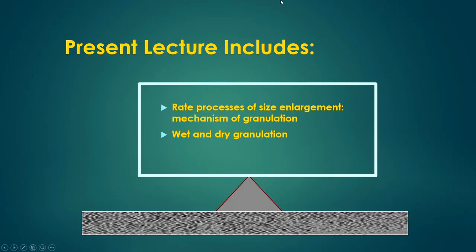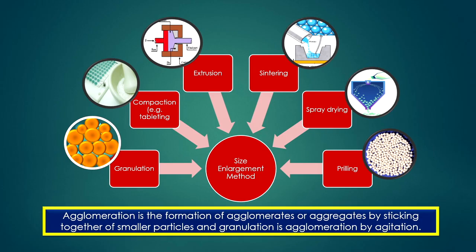Welcome to this massive open online course on solid-fluid operations. We are discussing the module on size enlargement of particles. In the previous lecture, we discussed the importance of size enlargement and the basic components required. In this lecture, we will understand the mechanism of size enlargement, covering the rate process of the granulation process, wet and dry granulation. Agglomeration and granulation are essentially the same process — the formation of agglomerates or granules by sticking together smaller particles, where granulation is agglomeration by agitation.